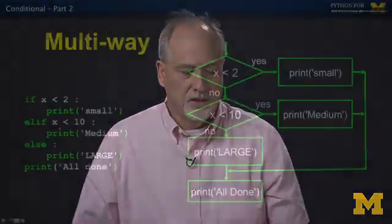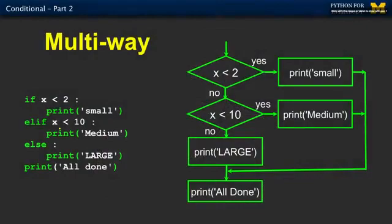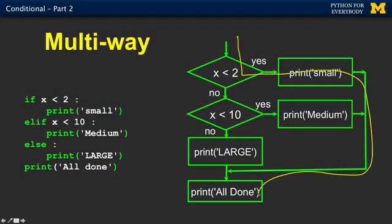The next step up in complexity is a multi-way if, and that uses a keyword called elif, which is really a combination of else and if. The way it works is, probably easier to do this on the flowchart version. It comes down here, it asks the yes or no. If it's yes, it runs this one, and then it's all done. If it's no, and then yes, it runs this one, and it's all done.